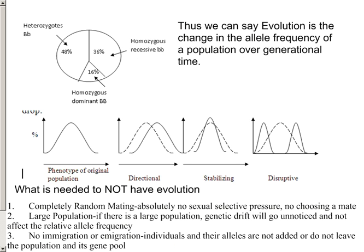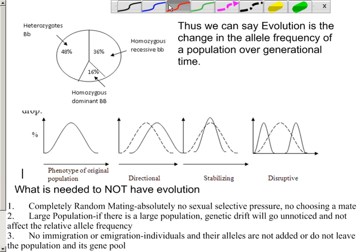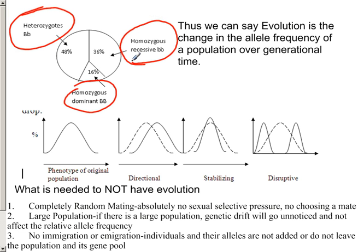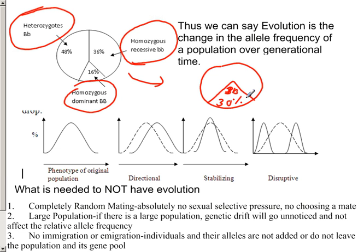In terms of genetics, evolution is really a change in the allele frequency of a population over generations. It's not individuals that evolve — it's the overall population. For example, if 60% of a population is currently homozygous dominant for a trait, and that trait is advantageous, over generational time we'll see homozygous dominant increase in allele frequency, while the other trait forms decrease.